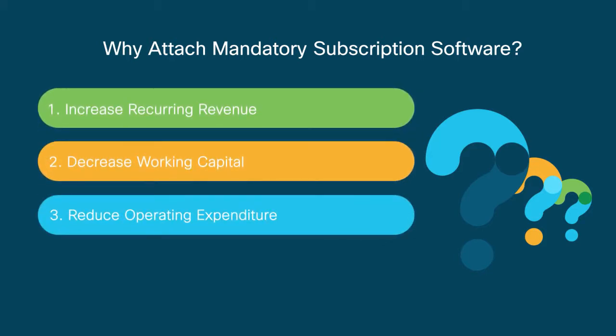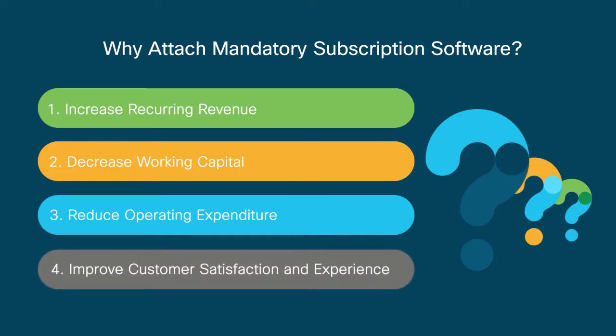Benefit 3: Reduce Operating Expenditure. By providing the necessary mandatory attach details, we are able to generate and deliver accurate entitlements to the customers seamlessly, thus reducing any overhead cost to serve the customers, which in turn reduces the operating expenditure for you and Cisco. Benefit 4: Improved Customer Satisfaction and Experience. When you associate the mandatory subscription software order to hardware details, the subscription software is auto-provisioned to the smart account upon device registration, thus improving ease of doing business and overall customer satisfaction and experience.